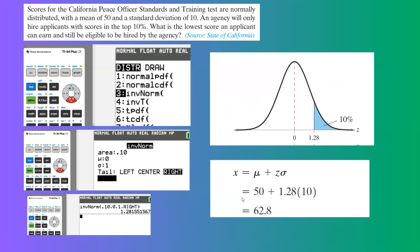Now that you have your z-value, you can use the reverse formula. x equals μ plus z times σ, which is 50 plus 1.28 times 10, which is 62.8. This is the minimum score an applicant needs to have to be considered by a hiring agency.